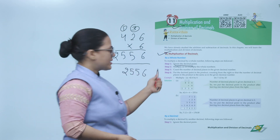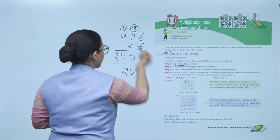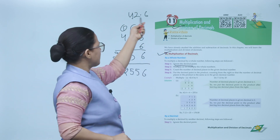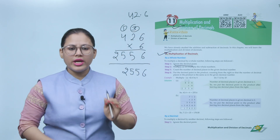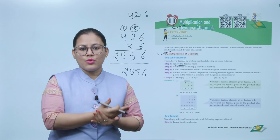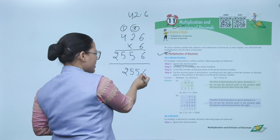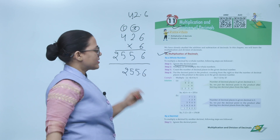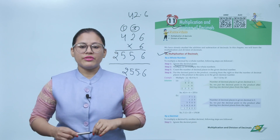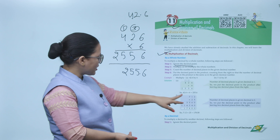Now in step 3, count the number of decimal places in the given decimal number. In the original number 42.6, there is one decimal place. So we put the decimal point in the product after leaving one decimal place from the right. The answer is 255.6.